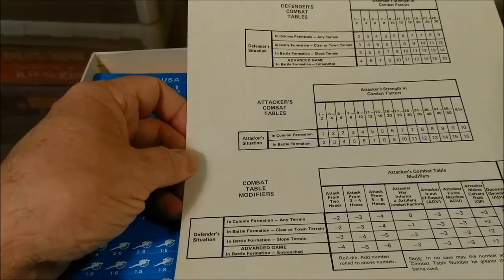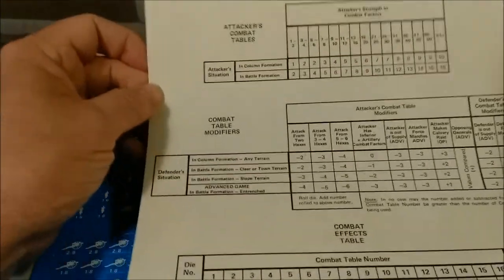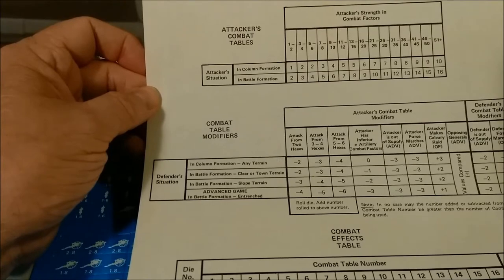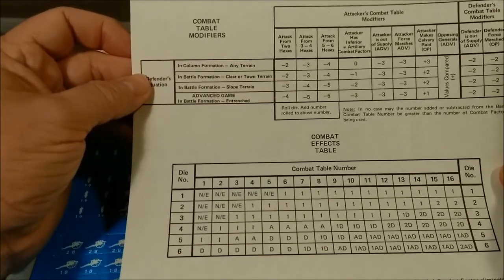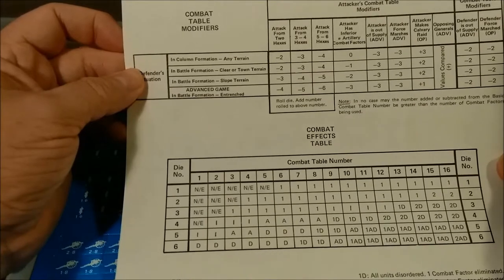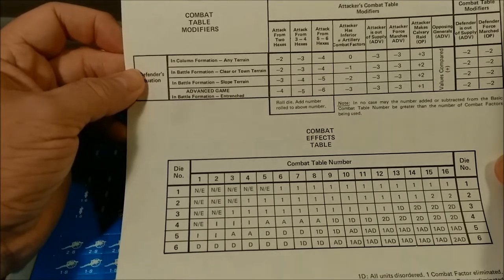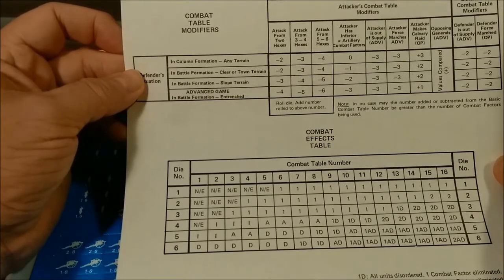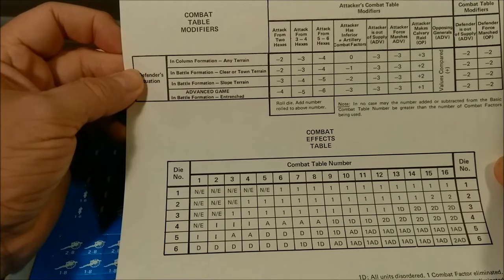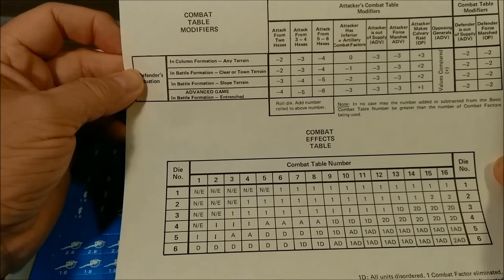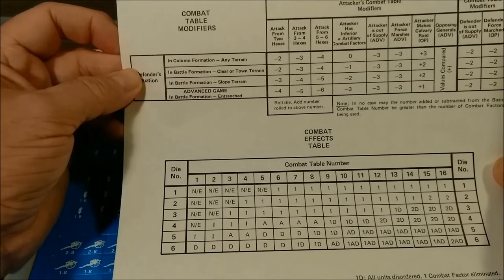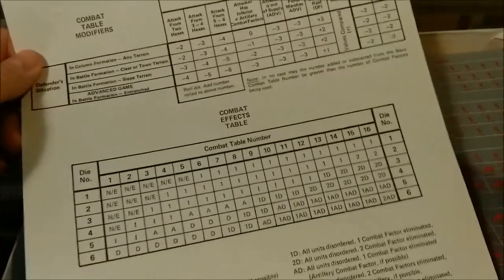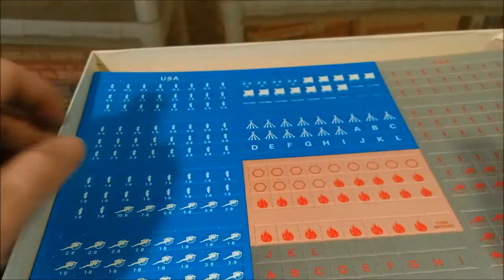We have attacker combat tables, defender combat tables, combat table multiplier modifiers, and then the actual combat table itself. Results include factor elimination and disorder. That covers the combat tables. Let's take a quick look at the counters.